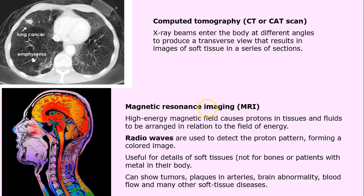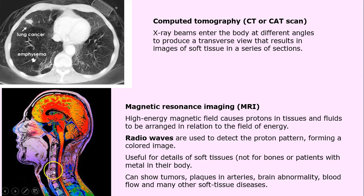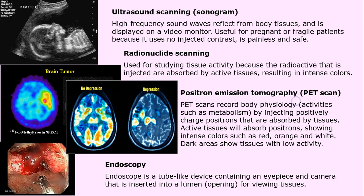MRI — magnetic resonance imaging — uses a high-energy magnetic field and protons, which are positively charged particles. The protons are arranged in relation to the energy field, and radio waves help read the proton pattern to produce colorful images. MRI is useful for soft tissues, including the brain, but not very useful for dense tissues like bone. It cannot be used on patients with metal in their body. It can show tumors, plaques, arteries, brain abnormalities, and even blood flow, though it tends to be pricey.